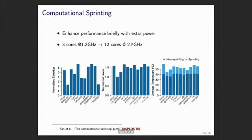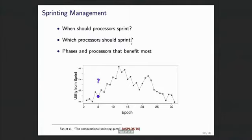Sprinting is the idea of enhancing performance briefly with extra power. Our notion of a sprint is three cores at 1.2 GHz getting boosted up to 12 cores at 2.7 GHz. For Apache Spark workloads we saw a speedup of 2 to 6x at a cost of 50% in power and about 20% in thermal effects. The idea: when should processors sprint? If I have a rack of a couple hundred processors, when and which processor should sprint?